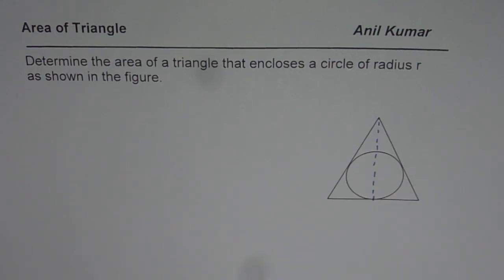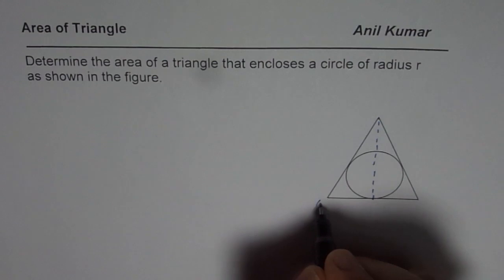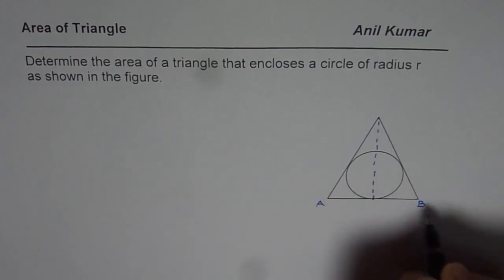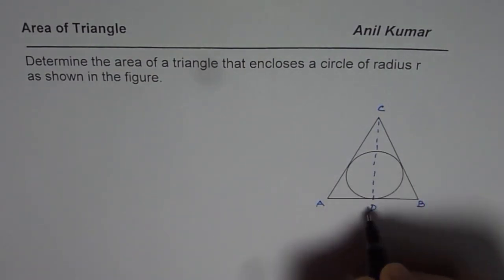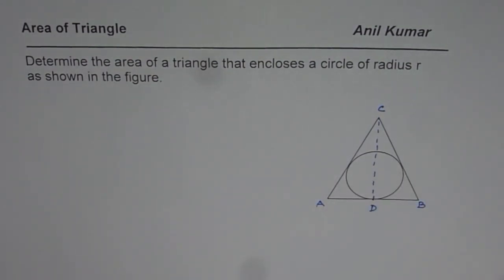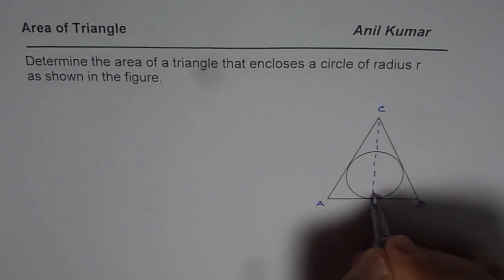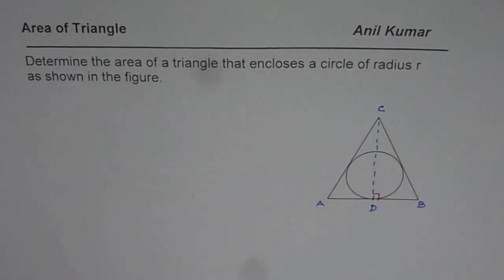So we will label our diagram so that we can figure out how to find, let's say A, B, C is the given triangle and CD is the perpendicular. So we have CD as the perpendicular or the altitude of the given triangle.